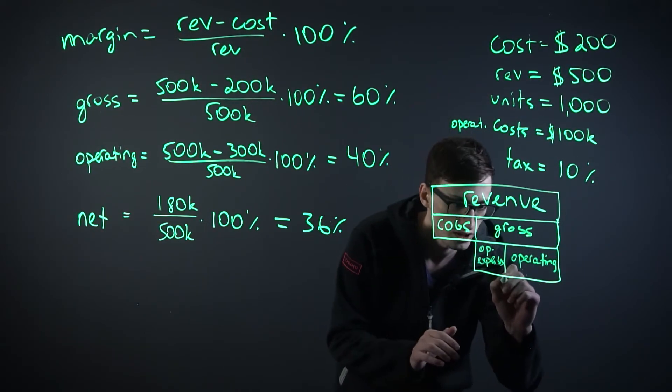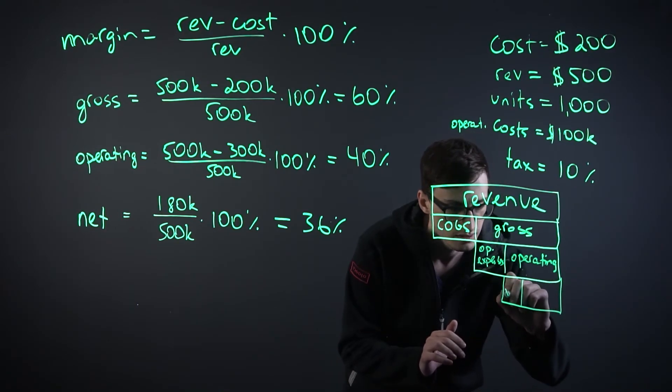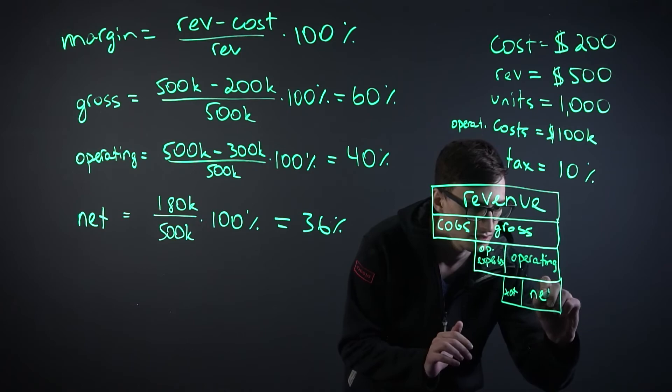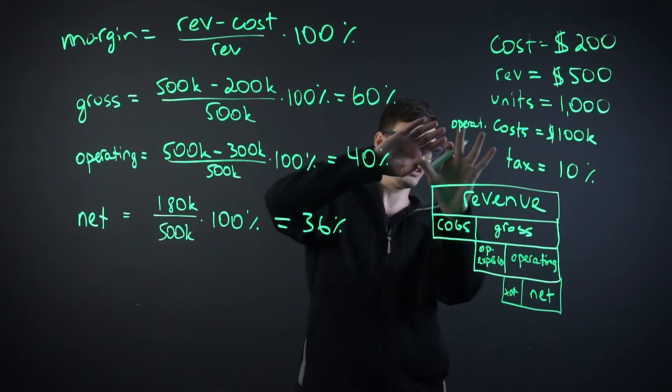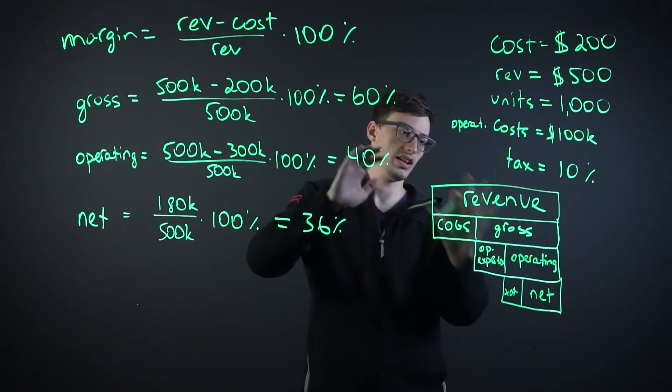And then operating margin breaks down into two more levels. We have the tax that you pay and then the net that you're left over with. See how it's like a diagonal, like half of a square and it just narrows down.